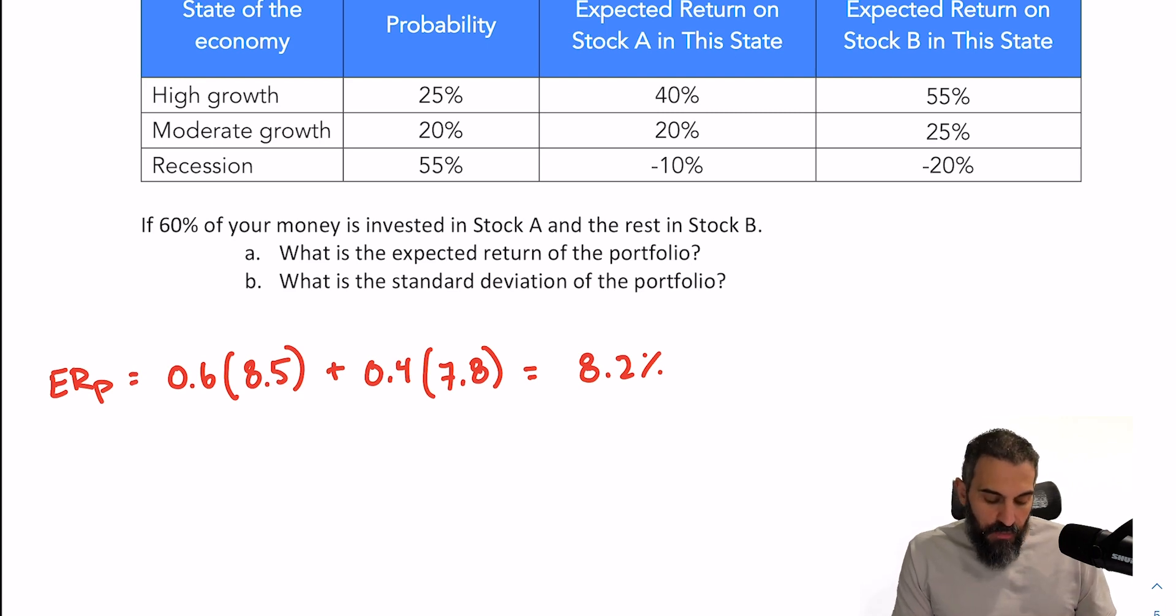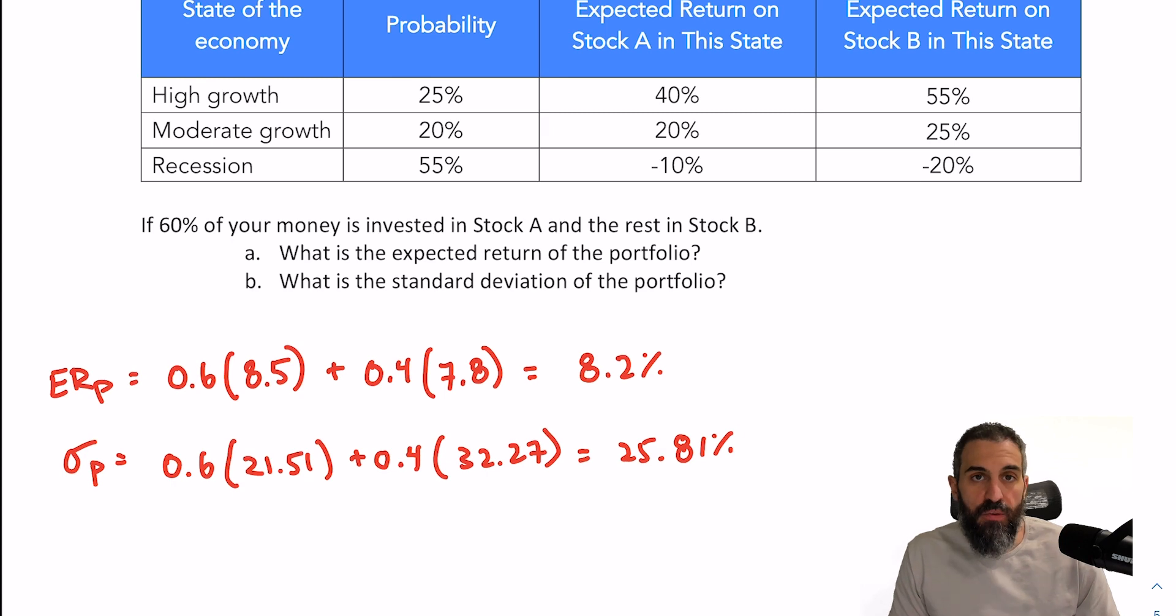And for the standard deviation, because the assets are perfectly positively correlated, then the easiest way to find the standard deviation of the portfolio is also by doing a weighted average. Now, it's important to note that you don't always do this. When they're not perfectly positively correlated, you would have to use a different formula. But when they are perfectly positively correlated, the standard deviation of the portfolio is the weighted average. So 60% times the standard deviation of stock A plus 40% times the standard deviation of stock B, and that gives you 25.81% as the standard deviation of the portfolio.